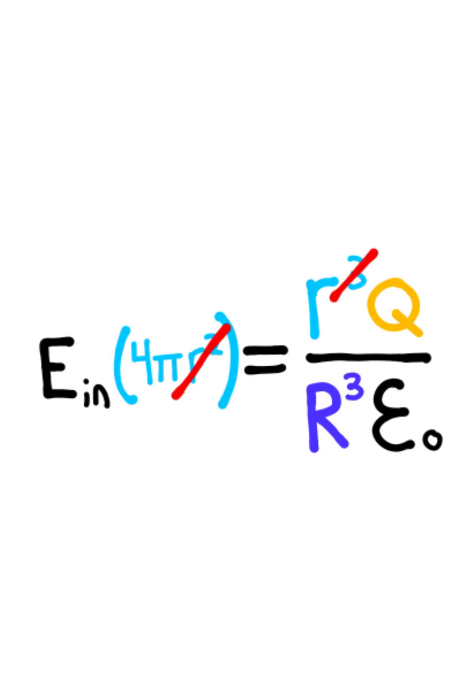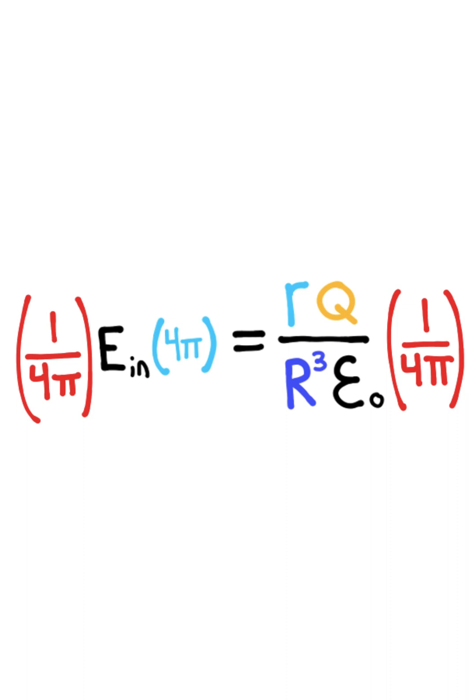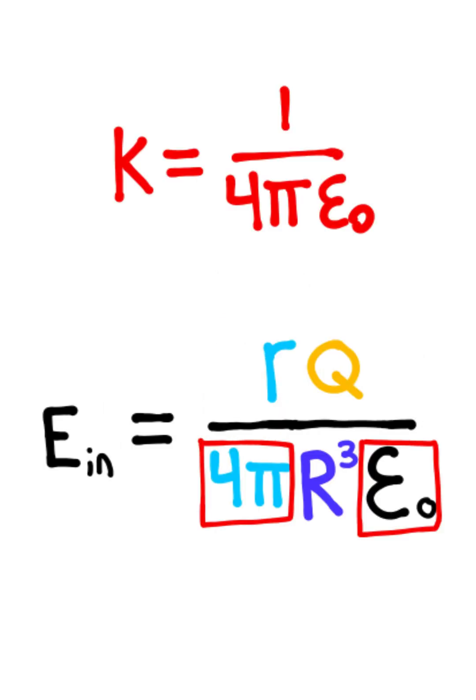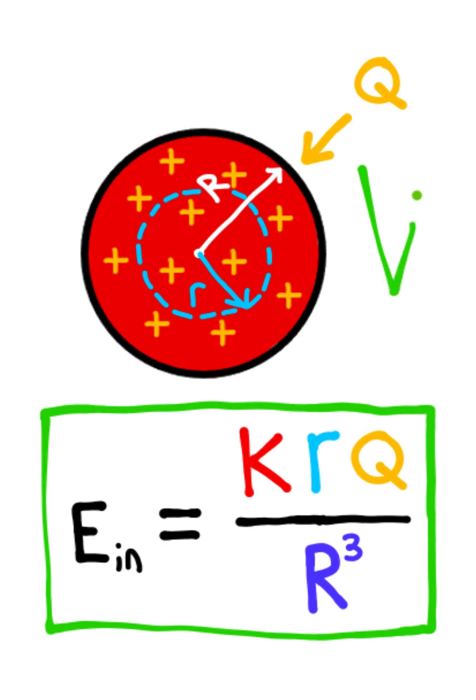Two of the little r's will cancel, giving us this equation. We can take 4π and divide both sides to get the electric field by itself, and recognize that we have 1 over 4π epsilon naught, which is equivalent to Coulomb's constant k. This equation gives you the electric field inside a charged insulating sphere.